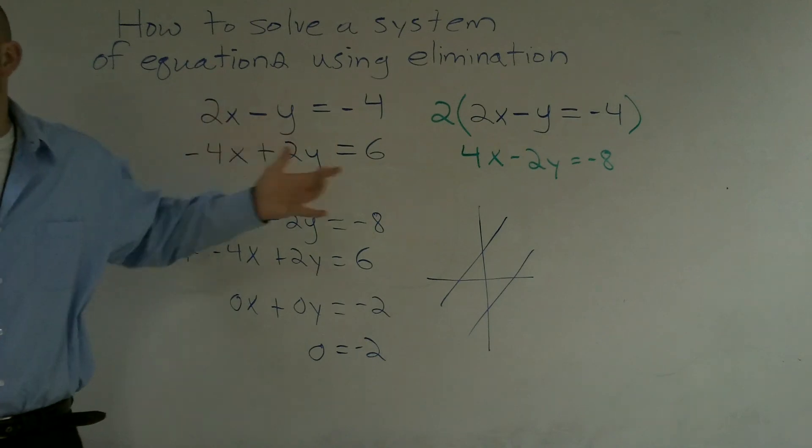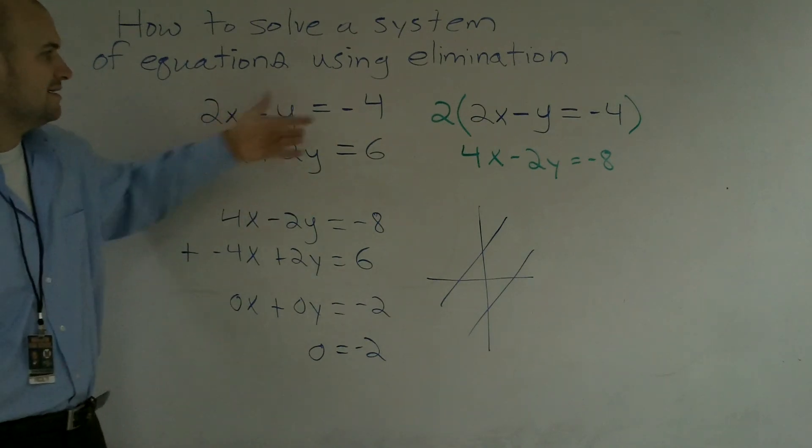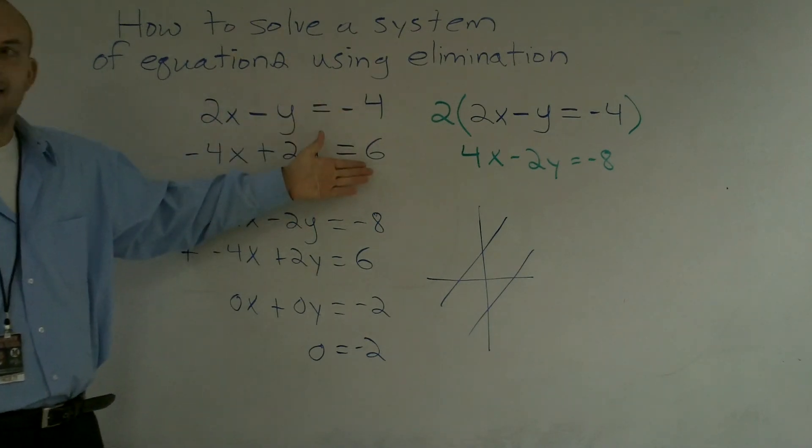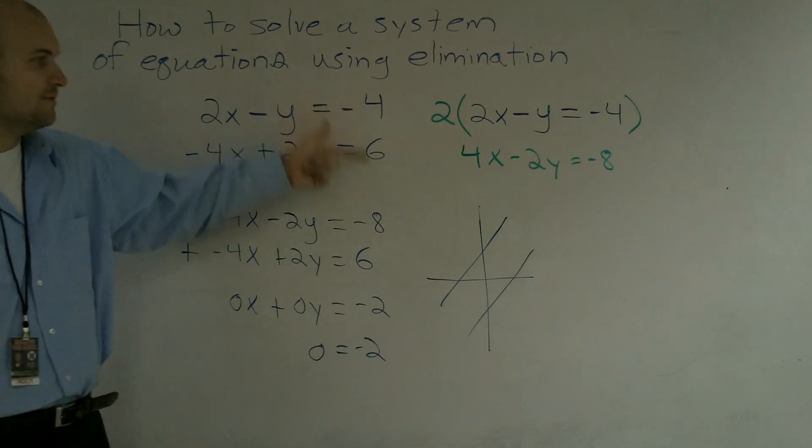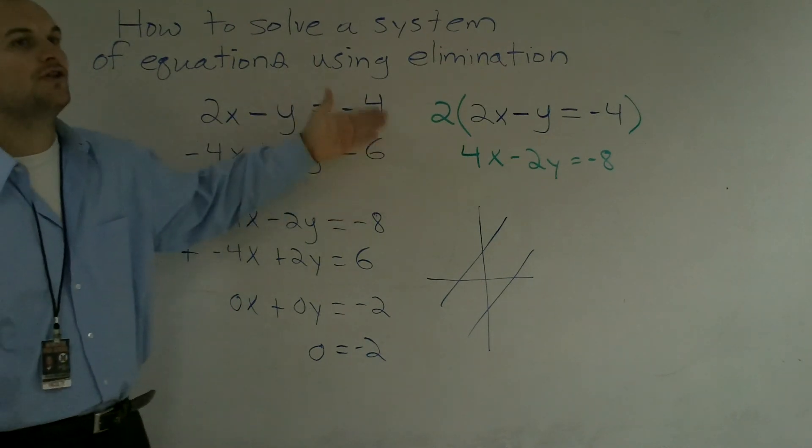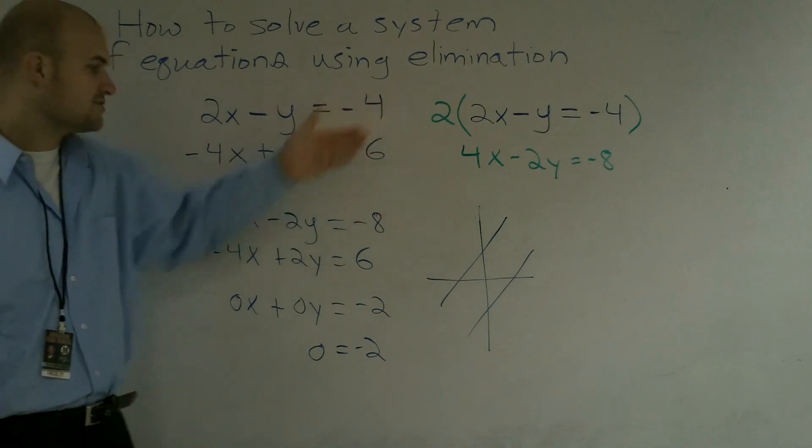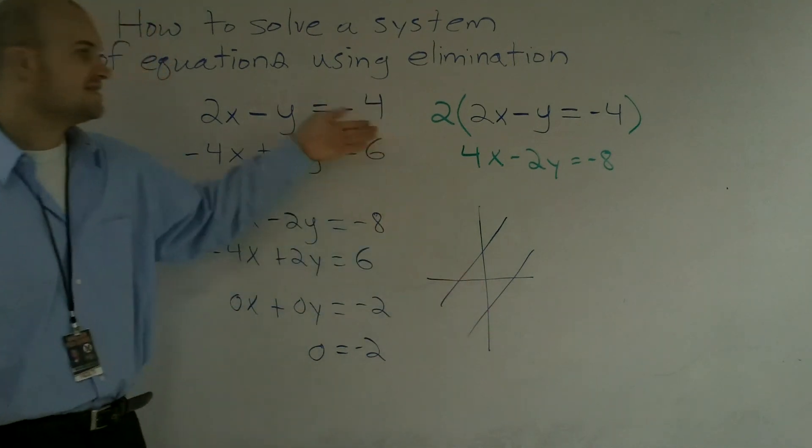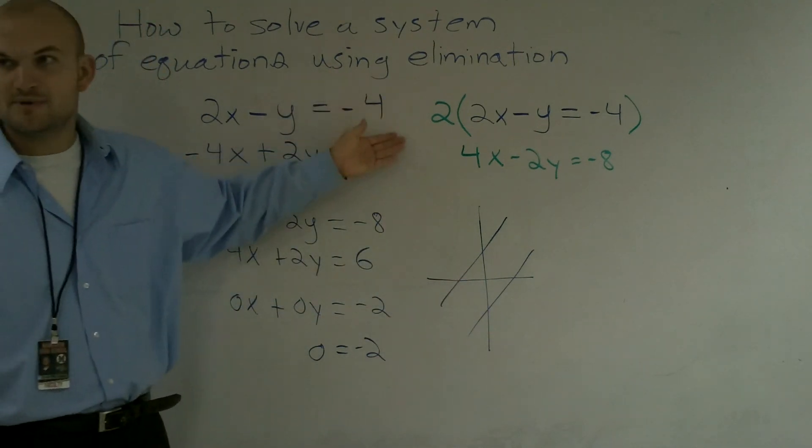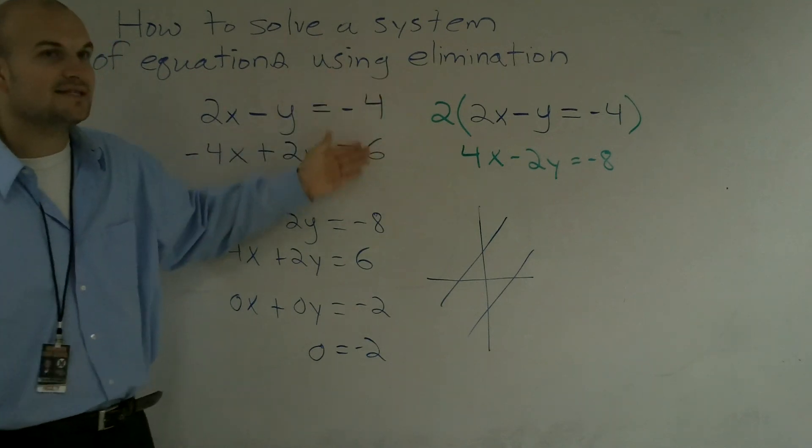If they're the same line, your c in your standard equation would exactly be the same. But since these are different, you know their y-intercept is going to be different, so therefore they're going to be parallel. But if the c in the standard equation ax plus by equals c, if their c was the same...